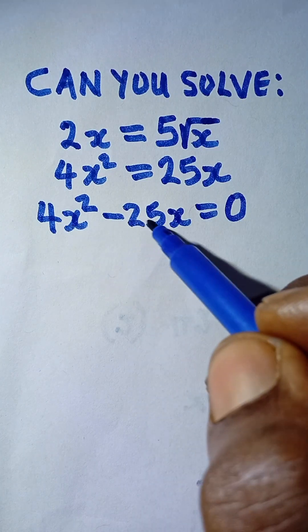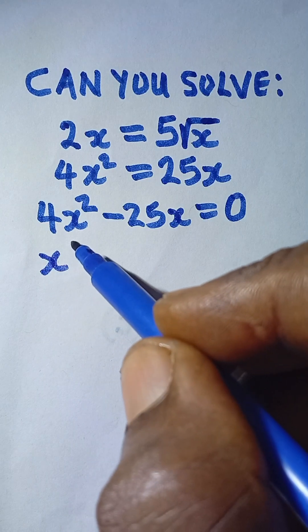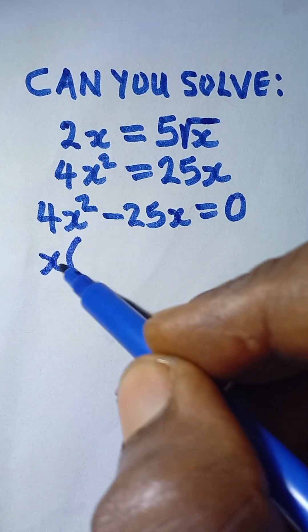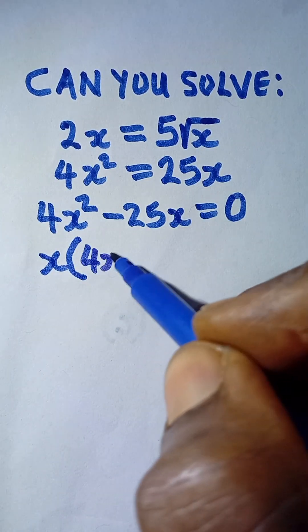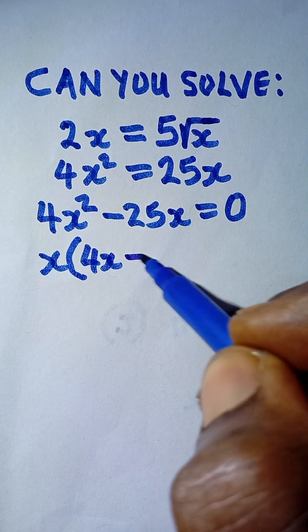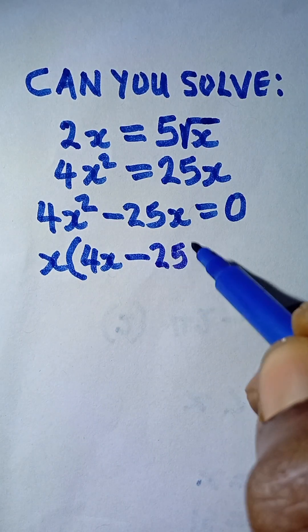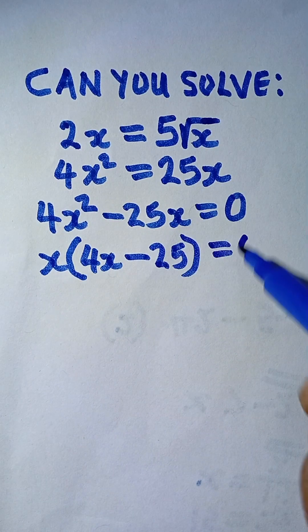So I can factor this left hand side. What is common is x. I bring it out of the bracket, and then 4x squared divided by x, I'm left with 4x. Then 25x - the minus is here - 25x divided by x, we are left with 25. And everything is equal to 0.